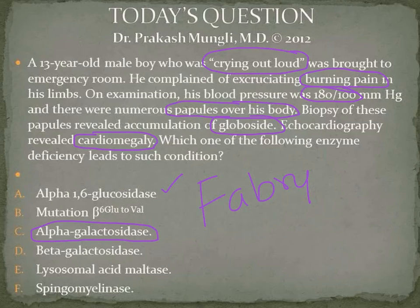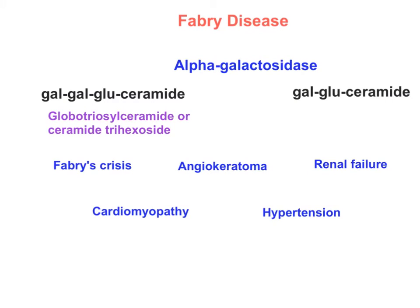Given the choices and the signs and symptoms in the case stem, this is a case of Fabry disease. Fabry disease is caused by deficiency of alpha-galactosidase enzyme, which is responsible for conversion of globoside — ceramide-glucose-galactose-galactose — to lactosyl ceramide, which is ceramide-glucose-galactose. This job is done by alpha-galactosidase, and notably this enzyme's gene is located on the X chromosome.